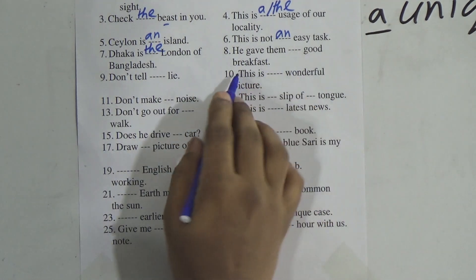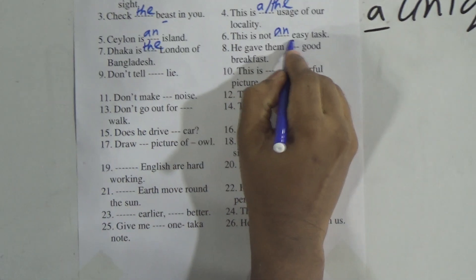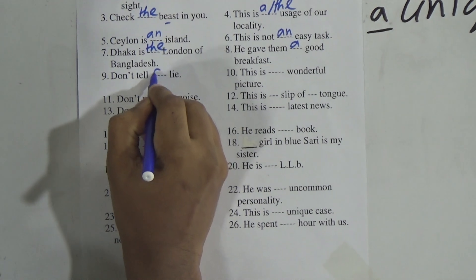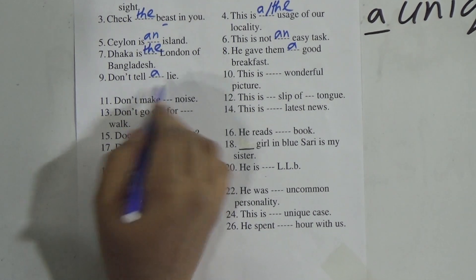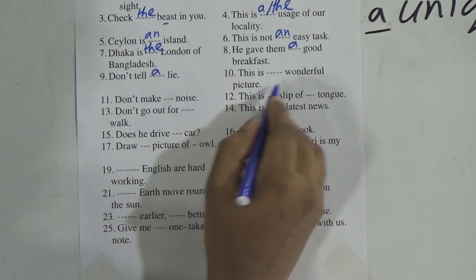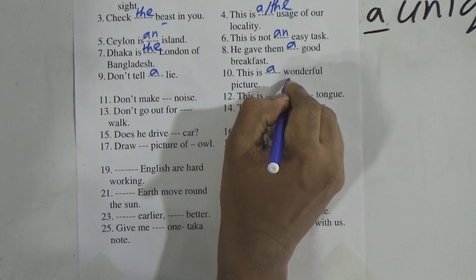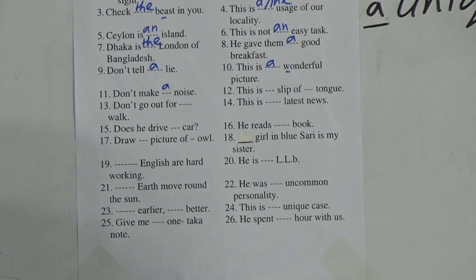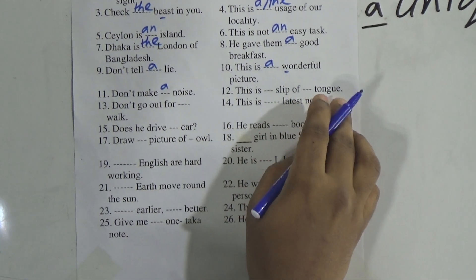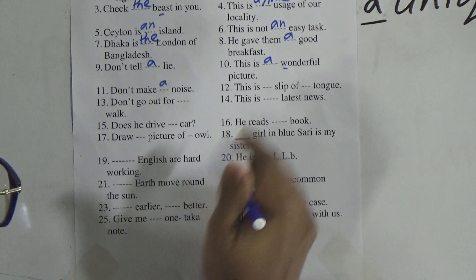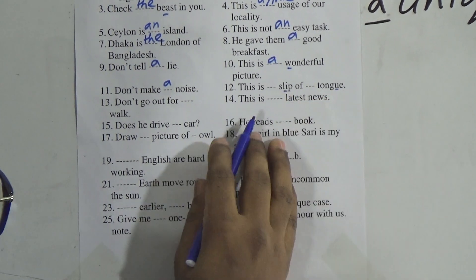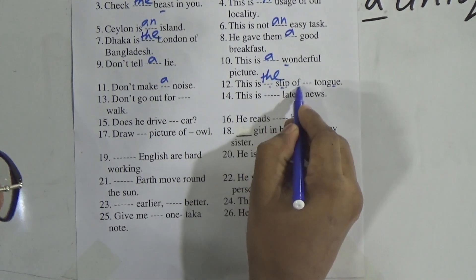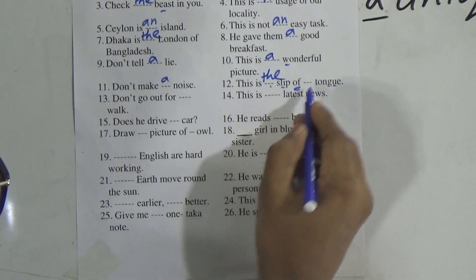He gave them a good breakfast — 'B' is a consonant, so we use 'a'. Number 9: Don't tell a lie — 'L' is a consonant. Number 10: This is a wonderful picture — 'W' is a consonant, we use 'a'. Don't make a noise — we use 'a'. This is the sleeve of a tongue — sleeve and tongue are definite, so we use 'the'. We also find the ___ of pattern here: this is the sleeve of the tongue.